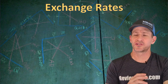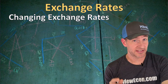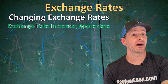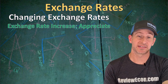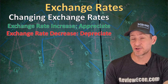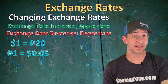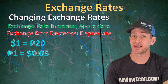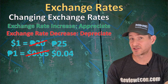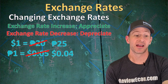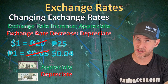Exchange rates do fluctuate — they freely float due to supply and demand. When the exchange rate increases, we say the currency has appreciated. When the exchange rate decreases, we say the currency has depreciated. For example, if one dollar is worth 20 pesos and the rate changes so one dollar is now worth 25 pesos, that means the dollar has appreciated and the Mexican peso has depreciated.